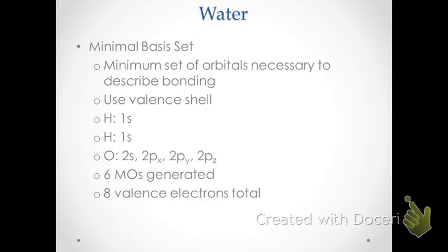We will have eight valence electrons: one electron from each of the hydrogens and six valence electrons from the oxygen.